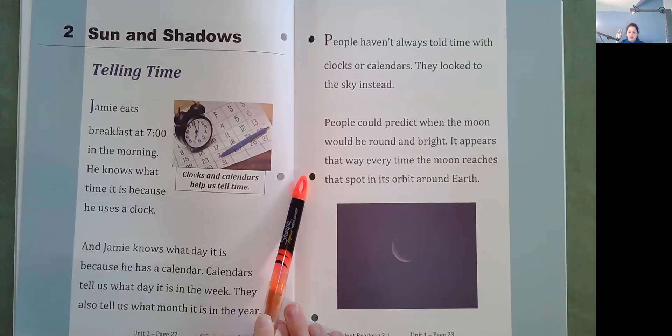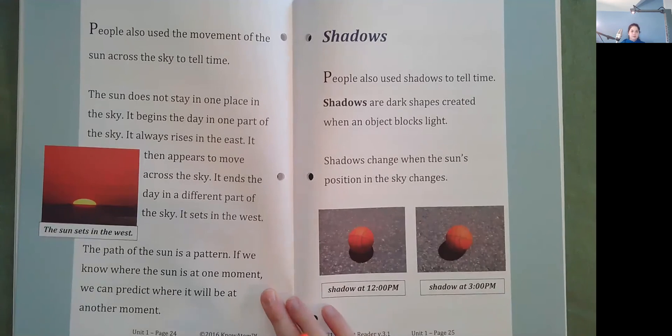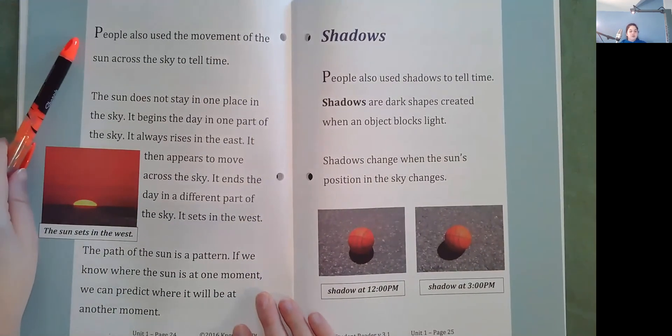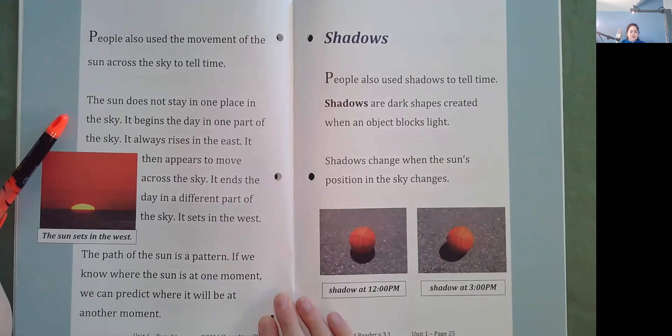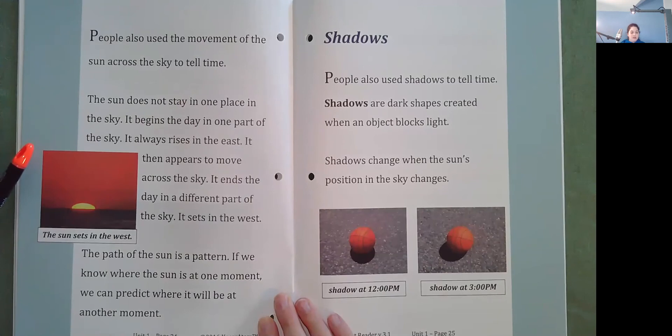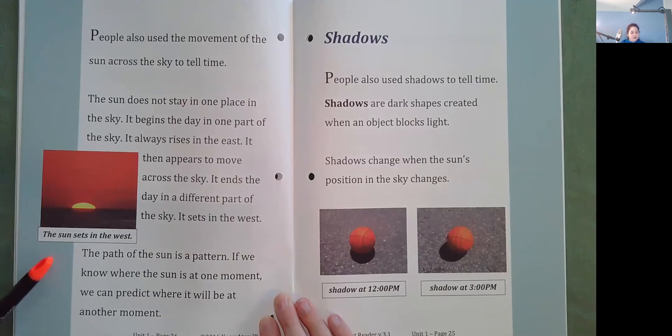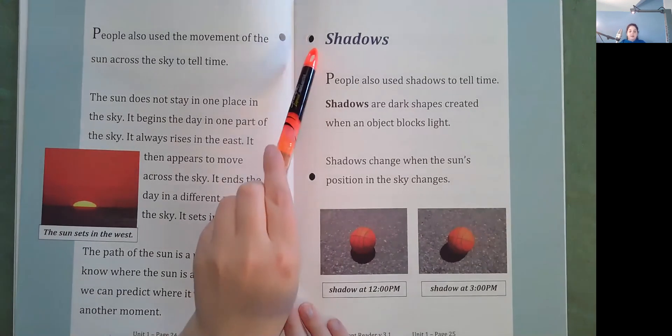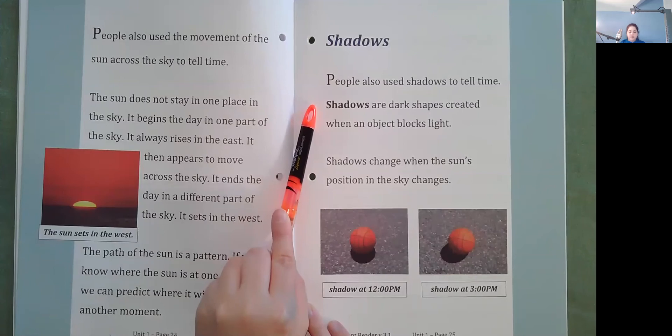People could predict when the moon would be round and bright. It appears that way every time the moon reaches that spot in its orbit around Earth. People use the movement of the sun across the sky to tell time. The sun does not stay in one place in the sky. It begins the day in one part of the sky. It always rises in the east. It then appears to move across the sky. It ends the day in a different part of the sky. It sets in the west. The path of the sun is a pattern. If we know where the sun is at one moment, we can predict where it will be at another moment.